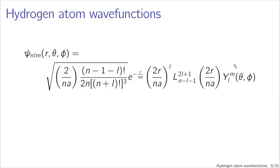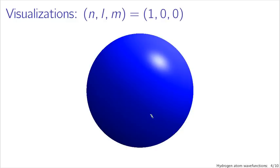It's hard looking at this to visualize what it actually looks like, so let's consider some sample cases. First, n, l, m = 1, 0, 0 — the lowest energy ground state. And it looks rather boring.